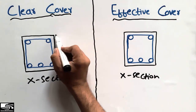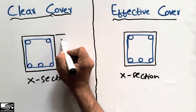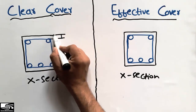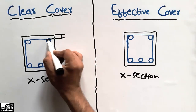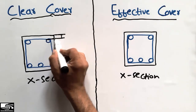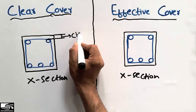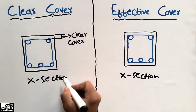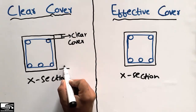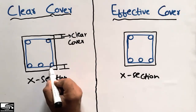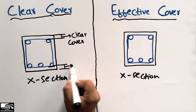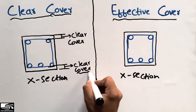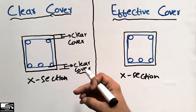The clear cover can be defined as the distance from the top surface of the beam to the top surface of the reinforcement. This distance is known as the clear cover. The clear cover has different values in the case of a beam, slab, column, as well as a footing.